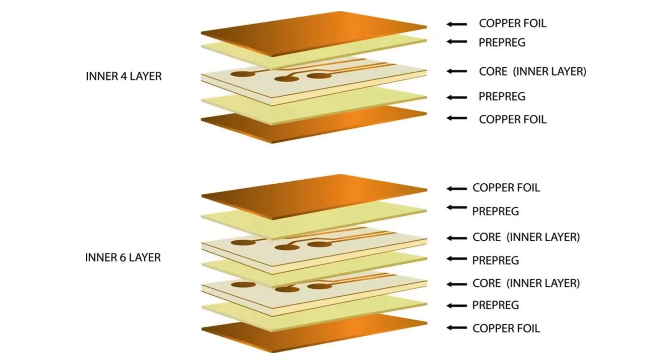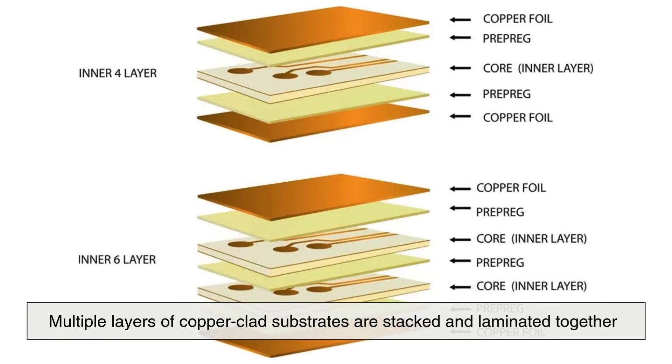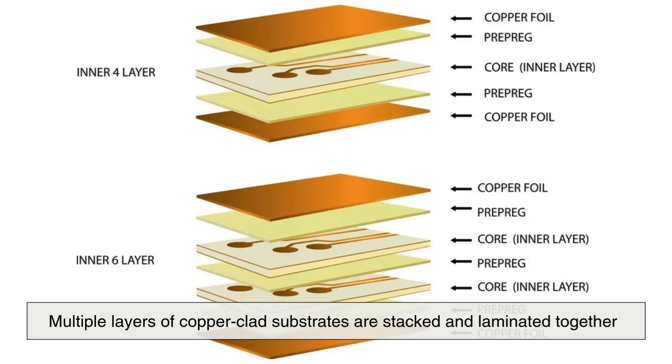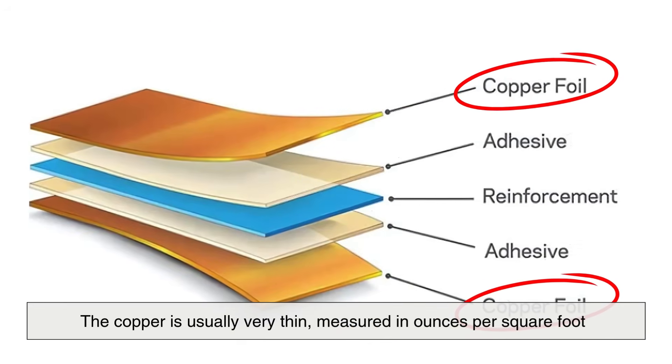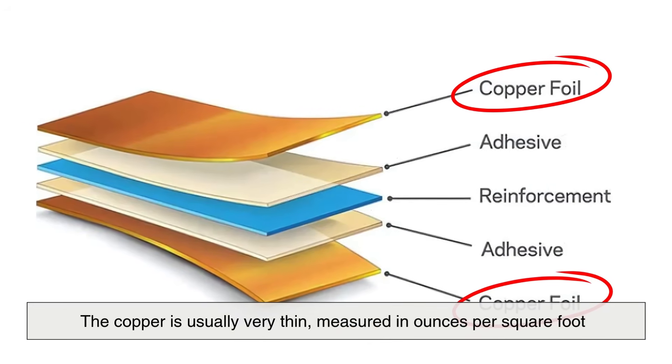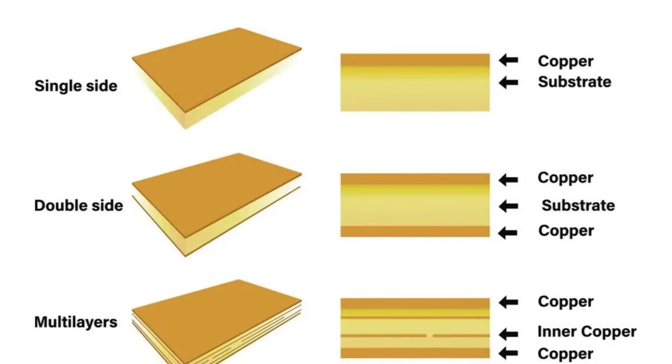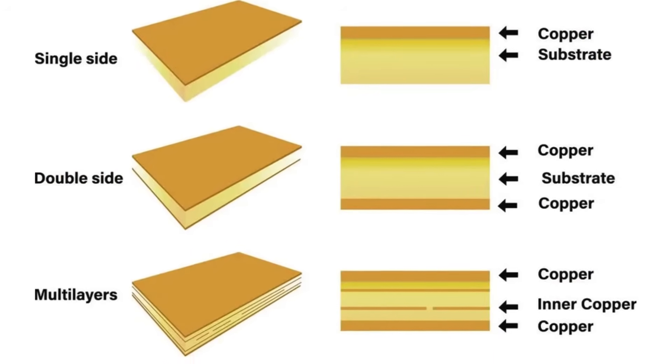For multi-layer boards, multiple layers of copper-clad substrates are stacked and laminated together. The copper is usually very thin, measured in ounces per square foot, and will eventually form the conductive pathways of the PCB.